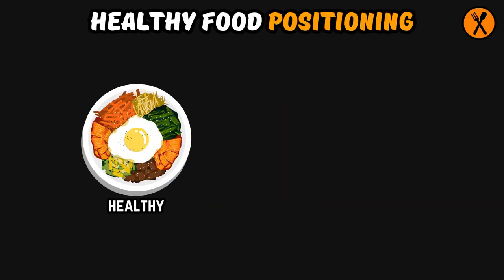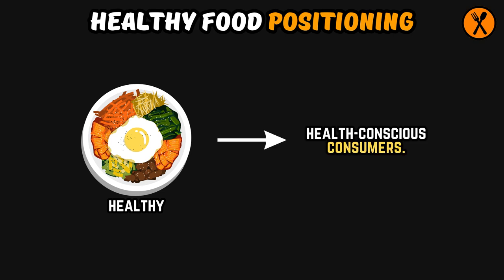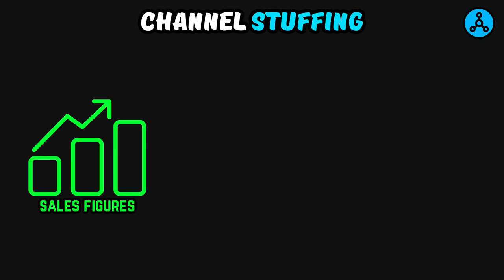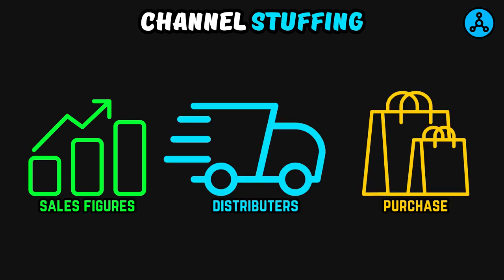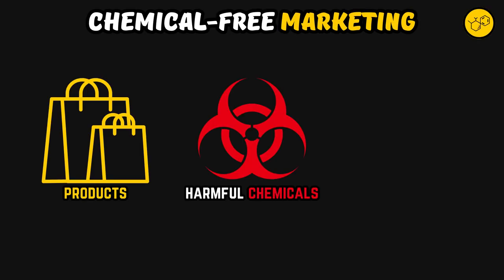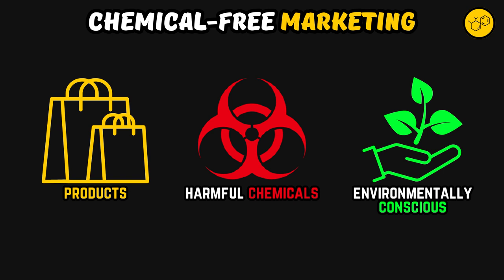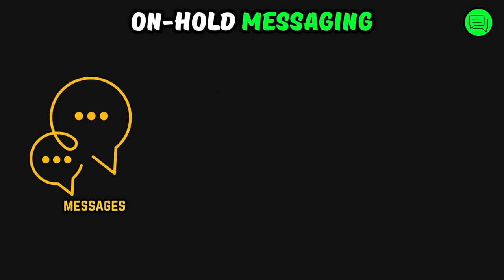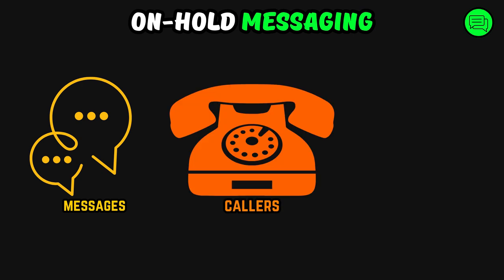Healthy food positioning: marketing products as healthy or nutritious to appeal to health-conscious consumers. Channel stuffing: inflating sales figures by encouraging distributors to purchase more inventory than they can sell. Chemical-free marketing: promoting products as free from harmful chemicals or additives to appeal to environmentally conscious consumers. On-hold messaging: providing marketing messages or promotions to callers placed on hold, which maximizes engagement.